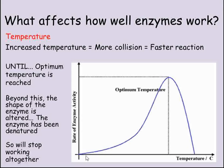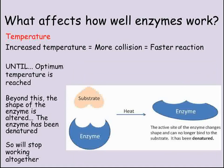Temperature has a different effect on enzymes than on other catalysts that are not proteins. To begin with, increasing the temperature makes particles move faster, so the substrate is more likely to land in the active site and the rate of reaction increases. However, beyond a certain temperature called the optimum temperature, increasing it further actually stops the enzyme working, because the heat affects the shape and structure of the active site, preventing the substrate from fitting in.